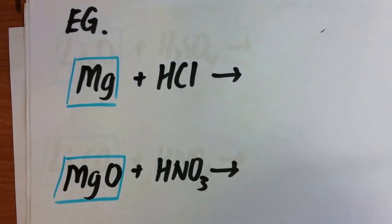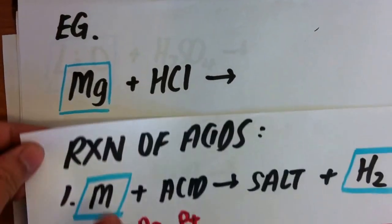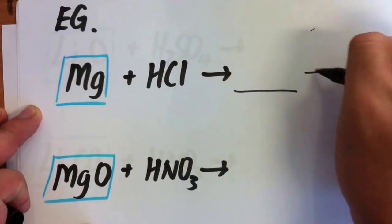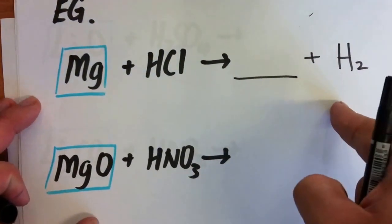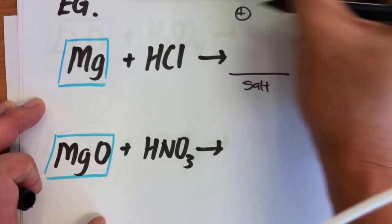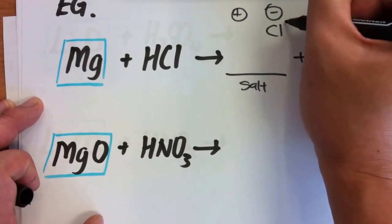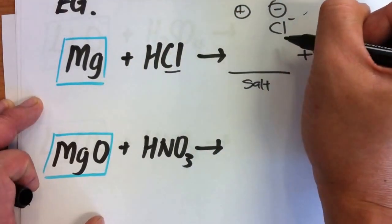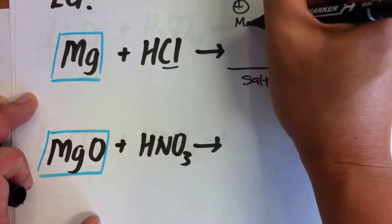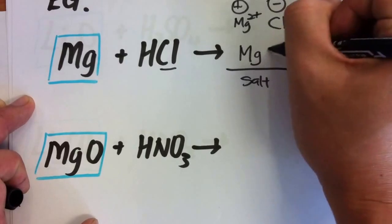So how do we write the equation? For Mg plus HCl, if it's a metal plus an acid, you get salt and hydrogen gas. A salt is a positive and a negative part. The negative part usually comes from the acid — Cl minus. The positive comes from the metal. Mg is 2 plus from the periodic table. So the salt will be MgCl2.